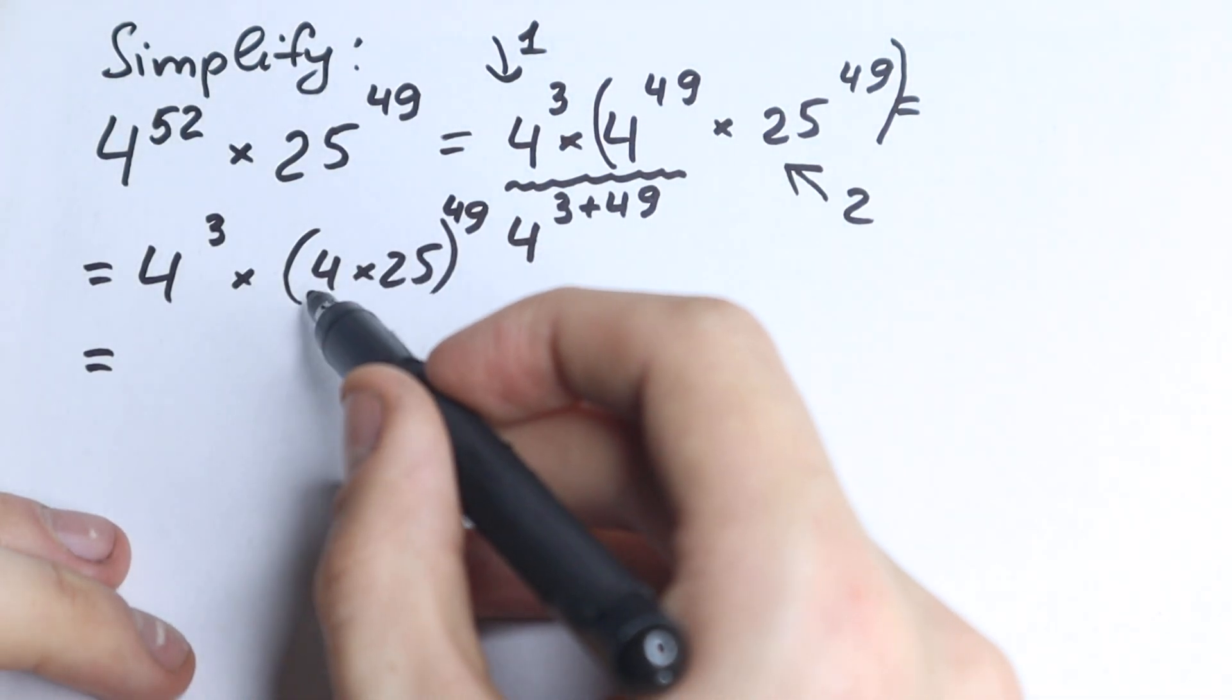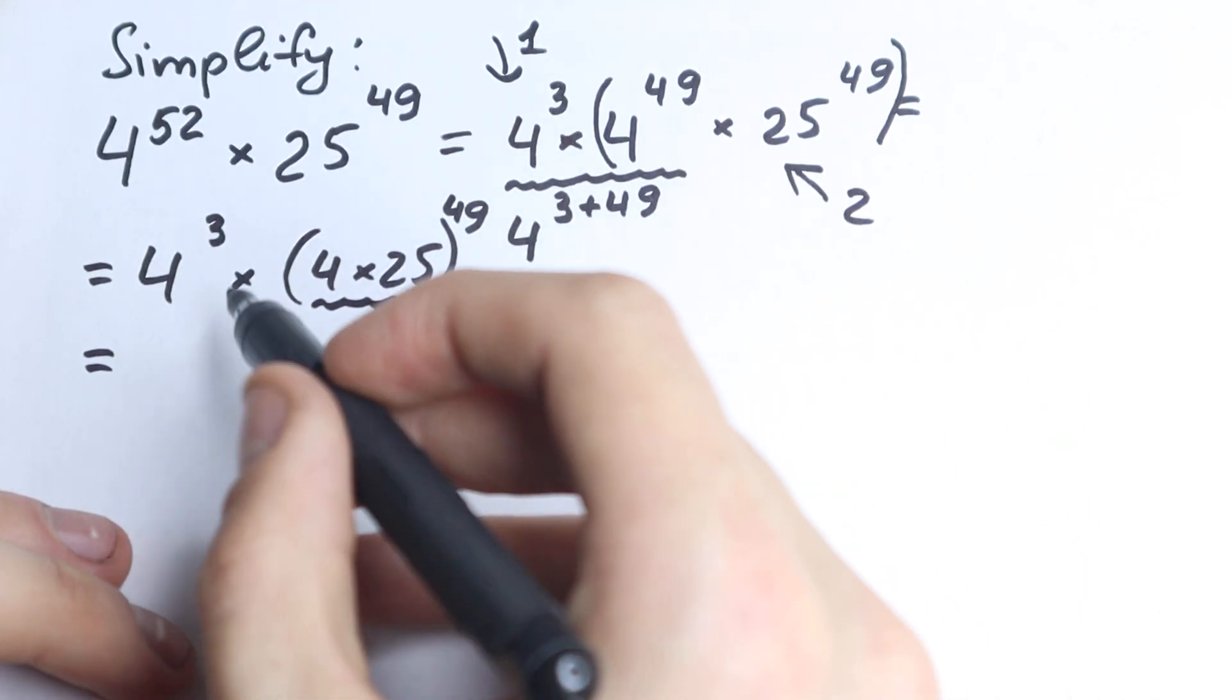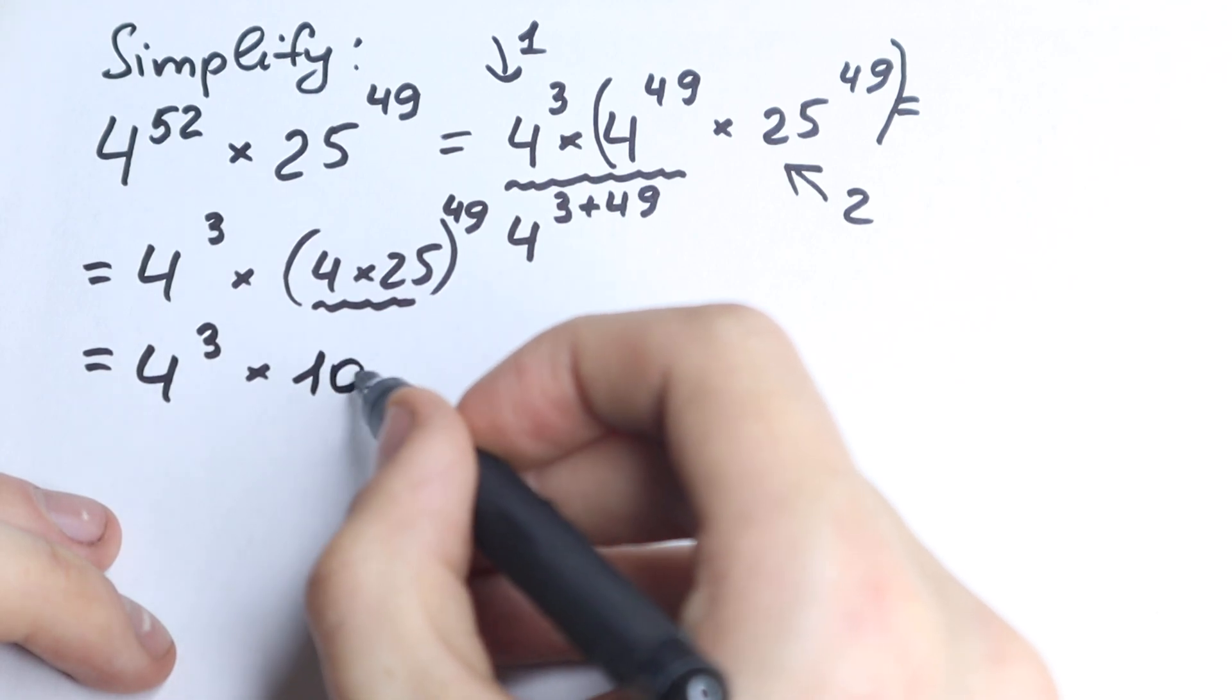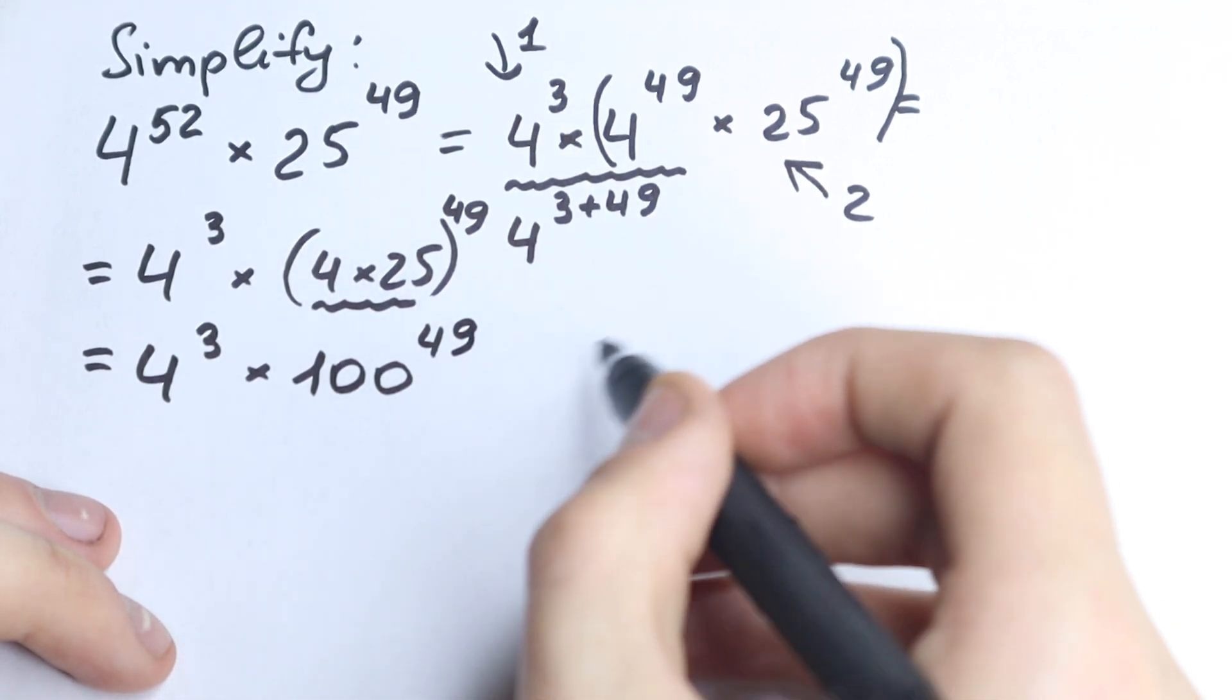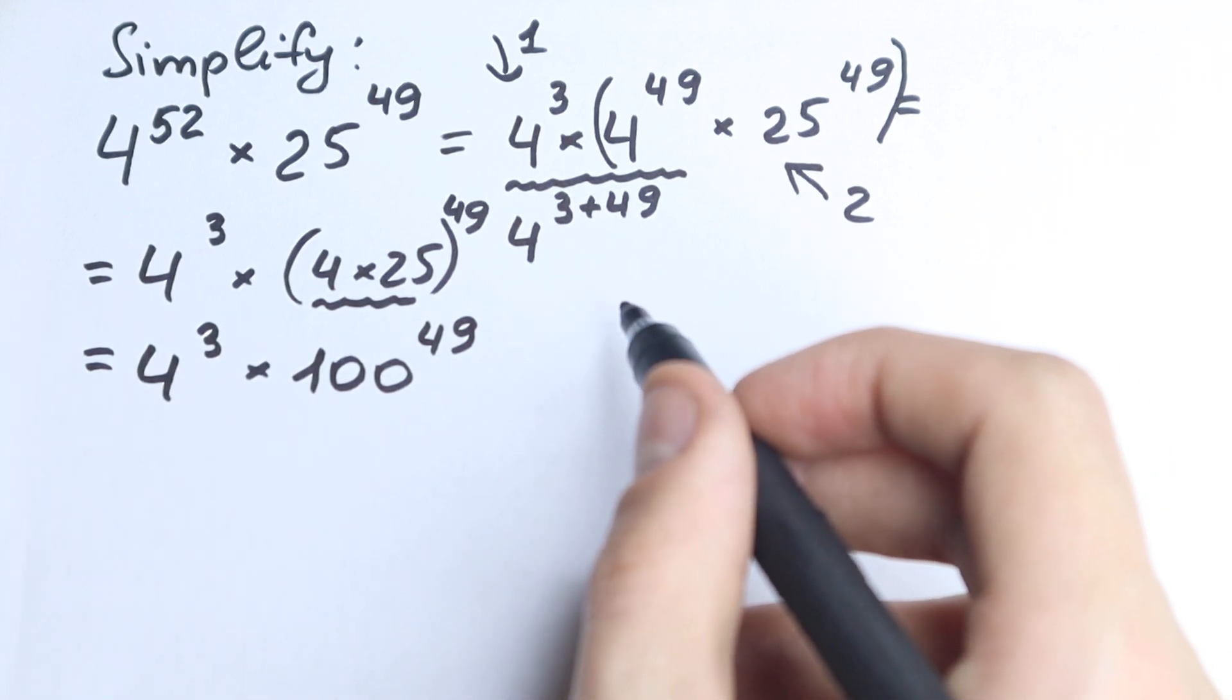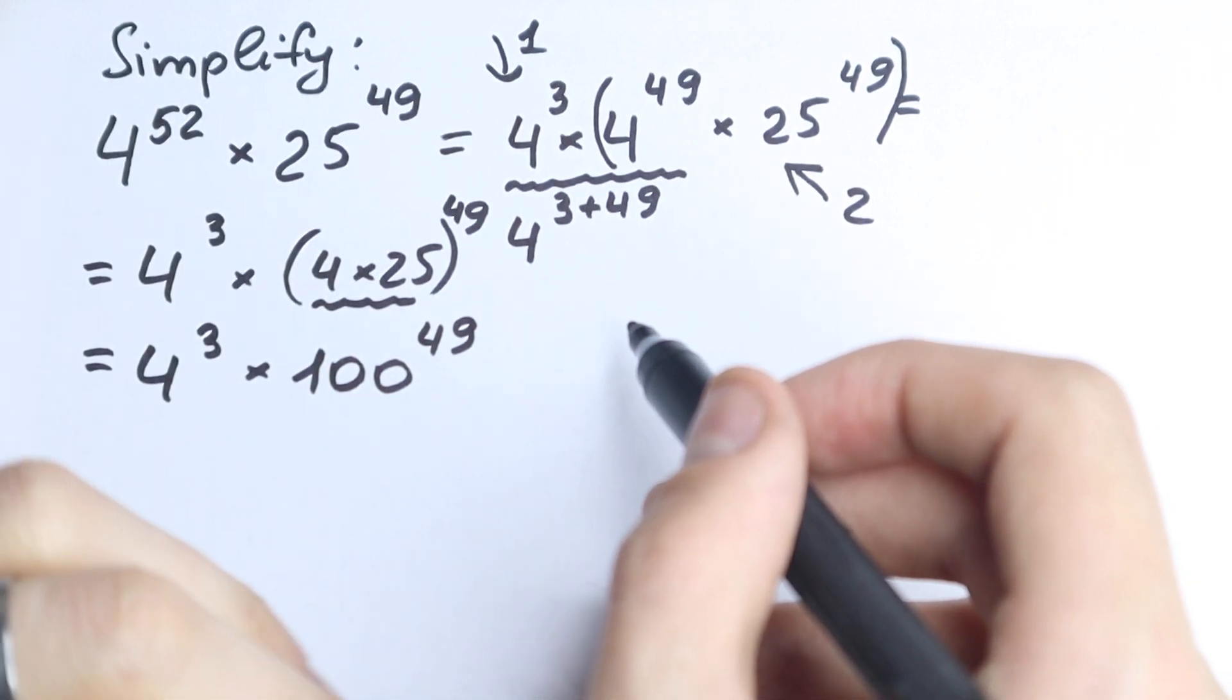What are we going to do next? 4 times 25 equals 100, which is absolutely brilliant. So we have 4 cubed times 100 to the power 49. Brilliant right here. 100, this is a really great base because we can easily write our final answer without any calculation.